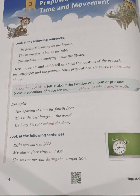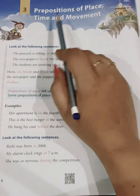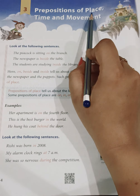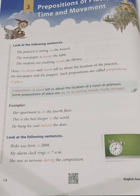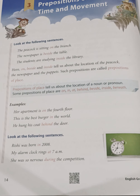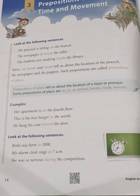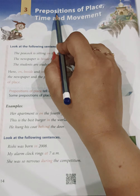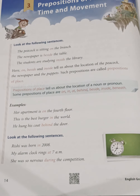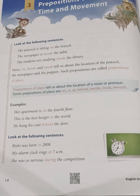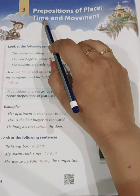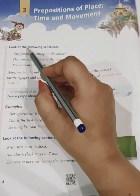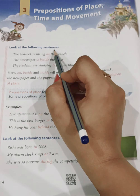Hello students, today we are going to start lesson number 3, that is prepositions of place, time and movement. In lower classes, we have already learnt about what are prepositions. Prepositions are the words which tell us the position of a noun. But now we will understand prepositions of place, time and movement. Look at the following sentences.